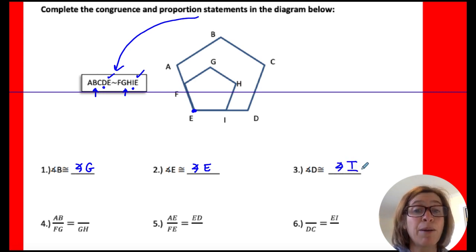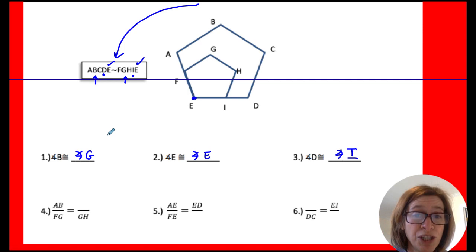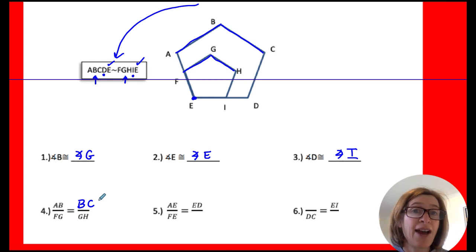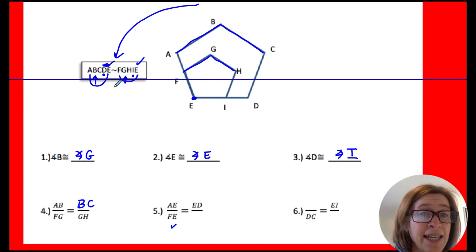Now we look at the parts. Now remember the sides couldn't be congruent because they're different sizes. So the proportion that would work would be then that AB over FG, because they correspond, would be equal to GH over BC. So I can actually write a proportion if I have a couple of the sides to find the missing sides. Let's see some more. AE over FE. So that corresponds to ED over IE.